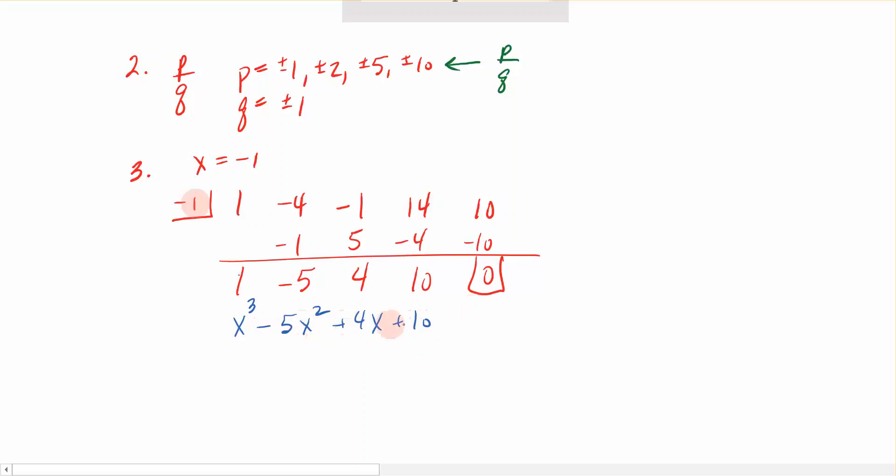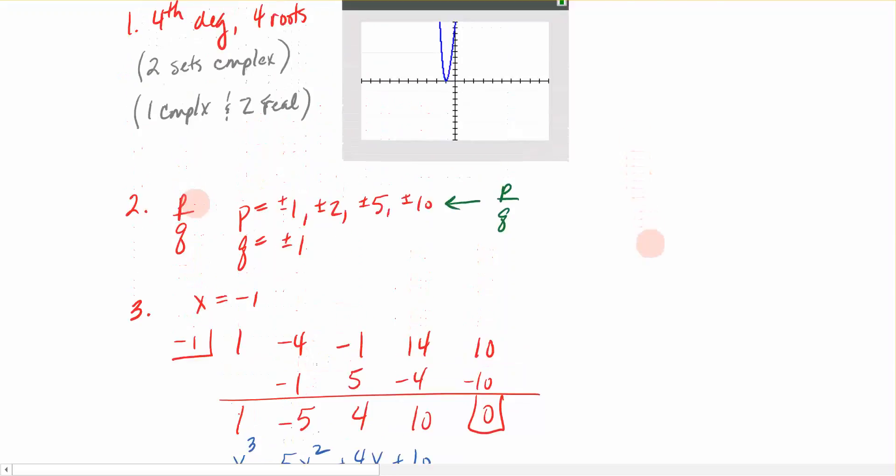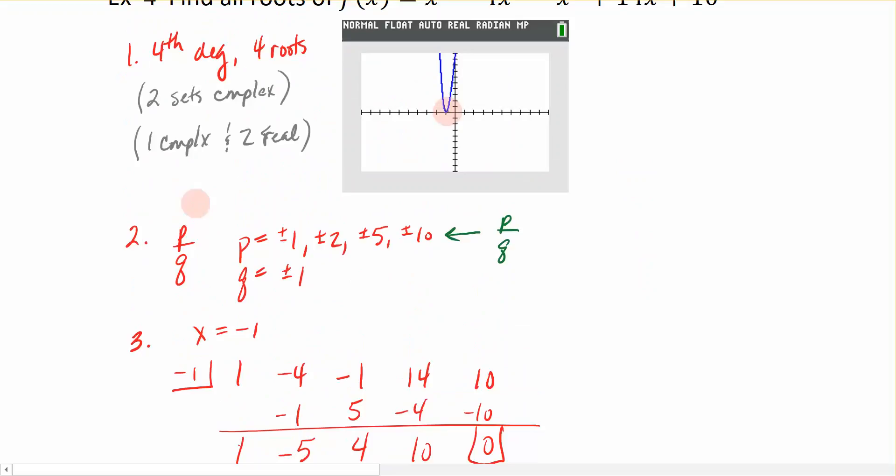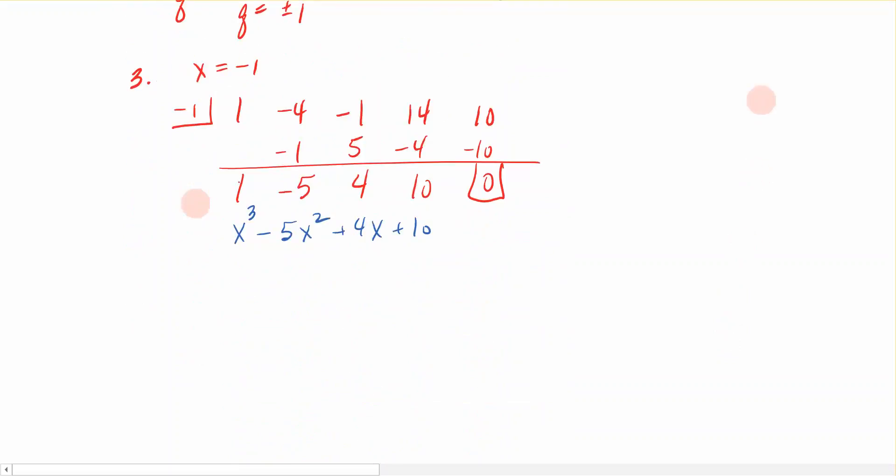Now I cannot factor this 3rd degree polynomial using the techniques that we've already known, like what we do with quadratics. So I need to go through and I need to do synthetic division again. Here's my list of potential roots. We already determined that we only really have one root that's showing up on my graph. This is then a repeated root. And you can see that this repeated root is occurring at negative 1. So if that's the case, then let's try to divide this function one more time by that repeated root of negative 1.